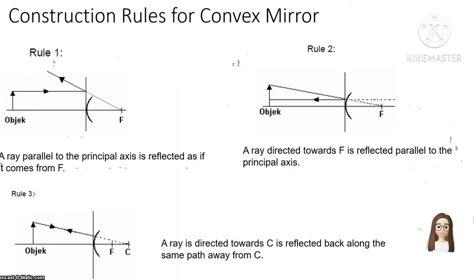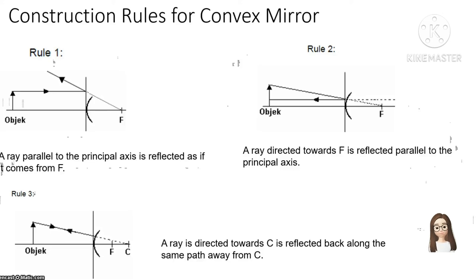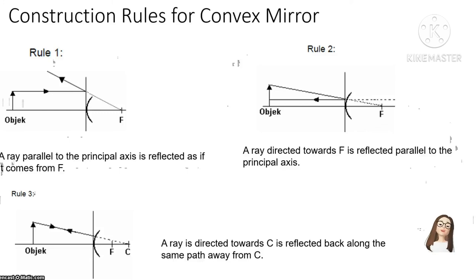How to construct the ray diagram for a convex mirror: Rule 1 — light from the object travels parallel to the principal axis. Rule 2 — a light ray directed towards C behind the mirror is reflected parallel to the principal axis. Rule 3 — a light ray directed towards C behind the mirror is reflected along the same path away from C. Follow these three rules to construct the ray diagram; you only need to draw two or all three.